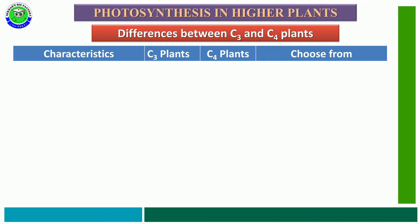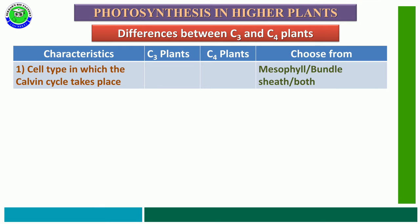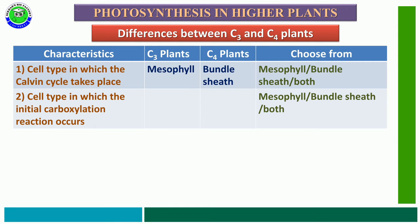In these differences, we have to look at different characteristic features of both C3 and C4 plants from the given options. The first characteristic feature is the cell type in which the Calvin cycle takes place. The given options are mesophyll cells, bundle sheath cells, or both. The correct answer is: in C3 plants, mesophyll cells perform the Calvin cycle, but in C4 plants, the Calvin cycle takes place in bundle sheath cells.